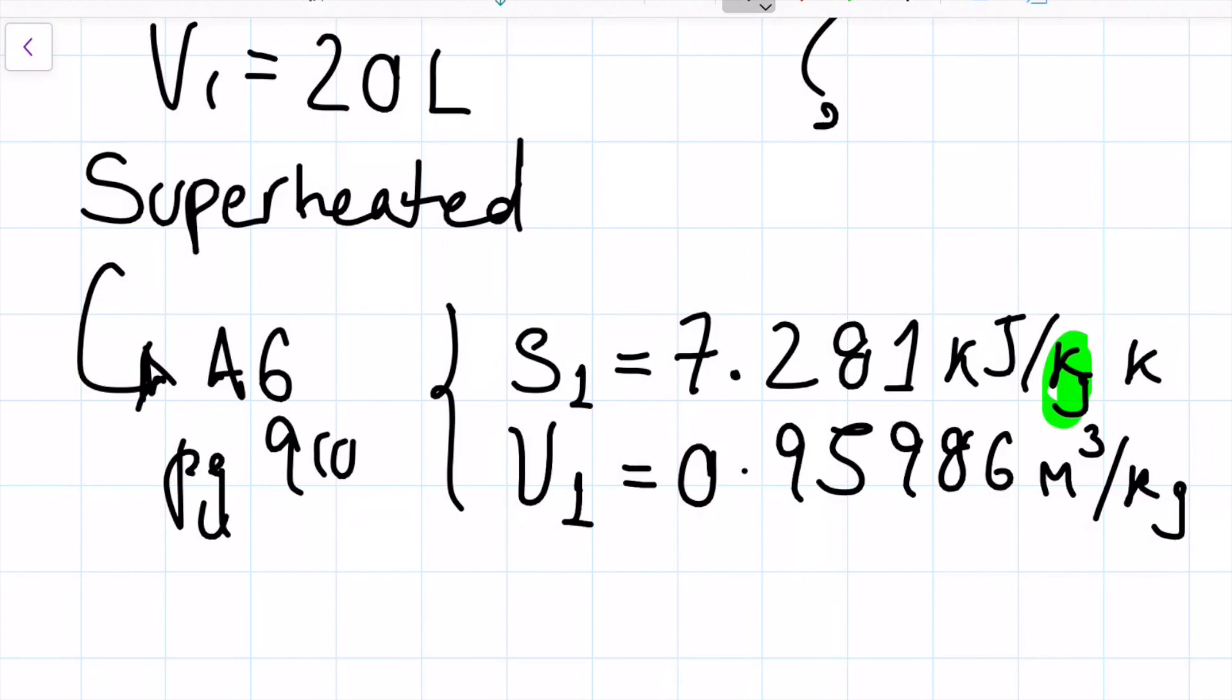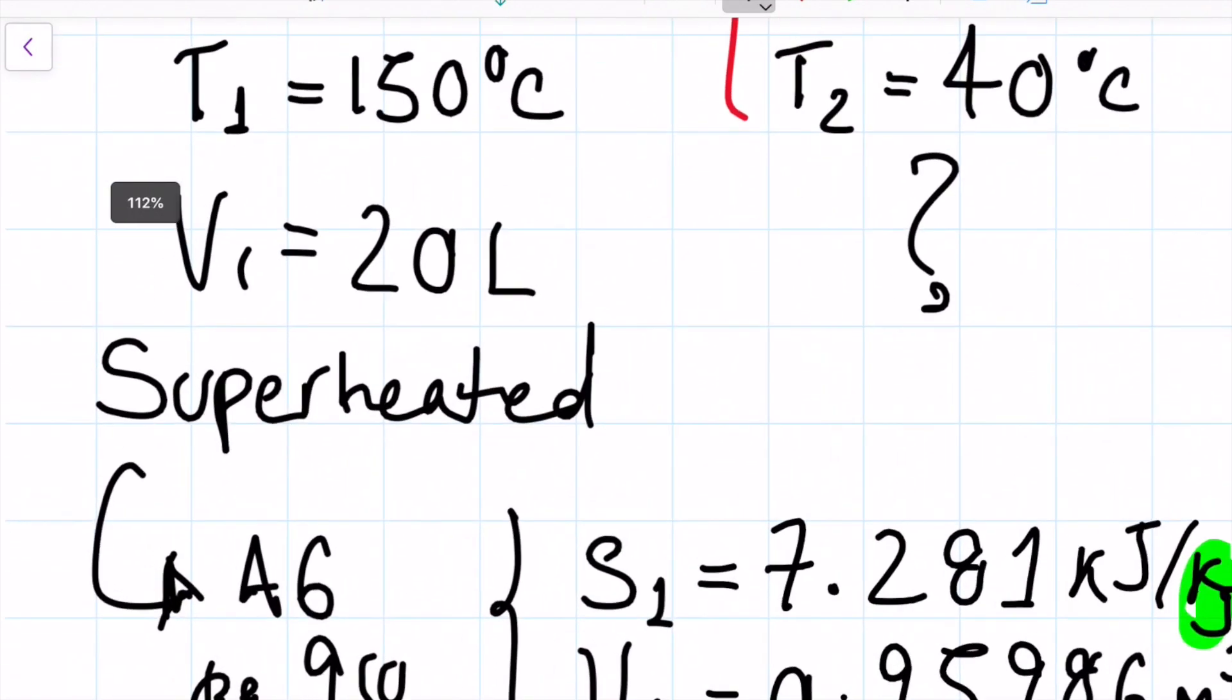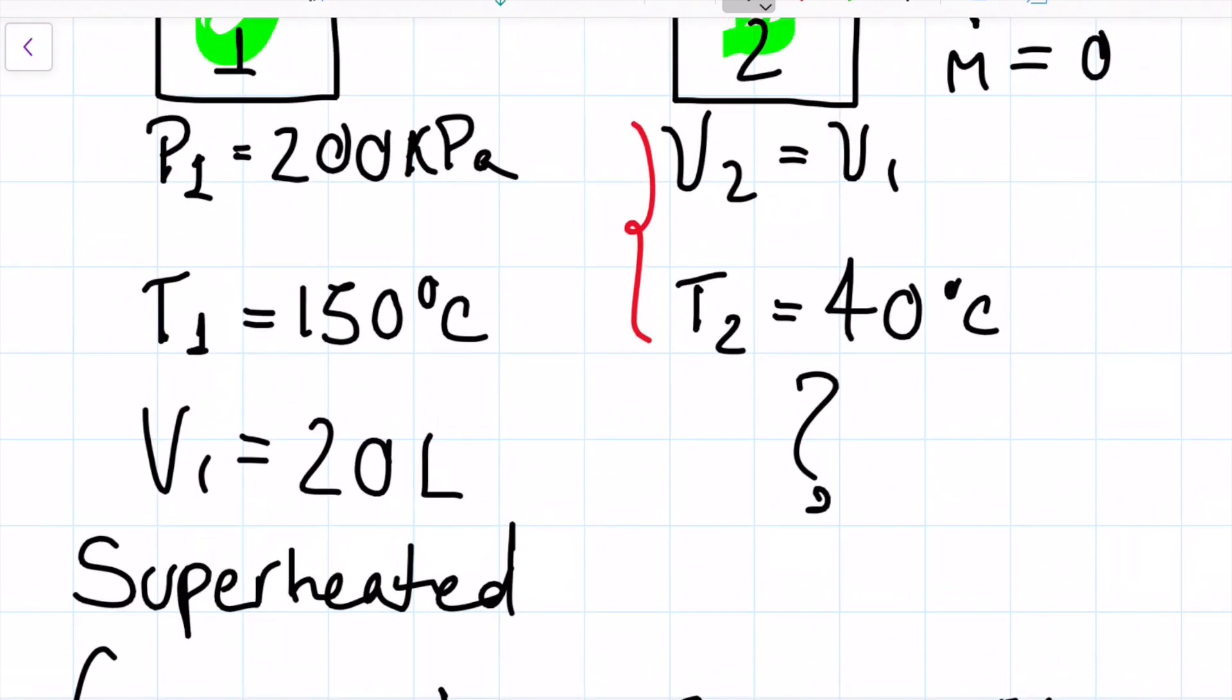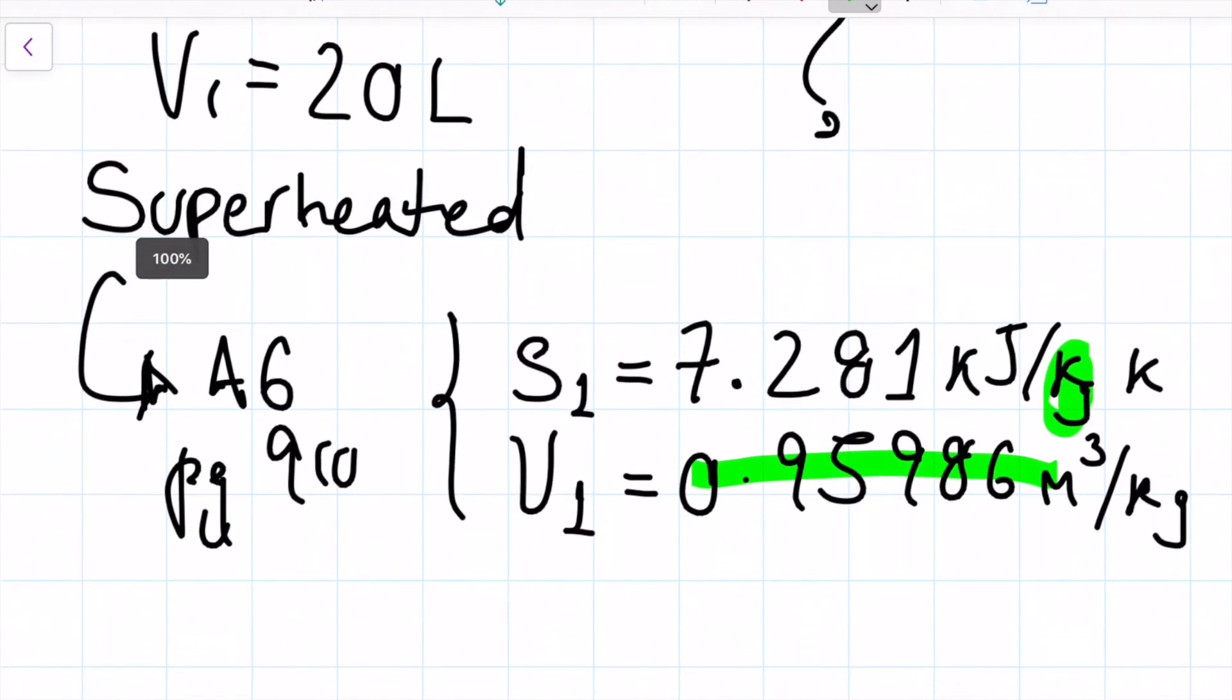Now we can go ahead and grab the mass if we want to, or we can define the second state because now we have two properties, right? Because we have the temperature of the second state, and now we also have the specific volume which is this guy here, right, because they have to be the same.